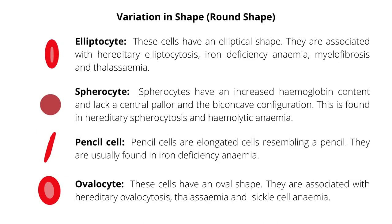Variation in abnormal red blood cell shapes can also be round. Elliptocytes have an elliptical shape and are associated with hereditary elliptocytosis, iron deficiency anemia, myelofibrosis, and thalassemia. Spherocytes have an increased hemoglobin content and lack the normal central pallor and the biconcave configuration. This is found in hereditary spherocytosis and autoimmune hemolytic anemia.